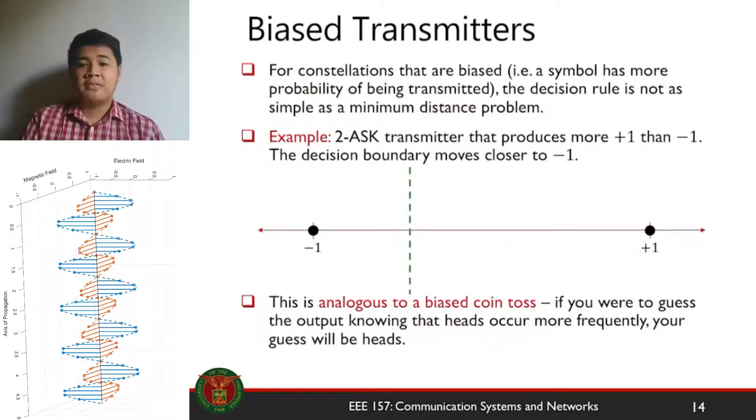Now, if you have a biased transmitter, so one symbol has more probability of being transmitted, the decision rule is not as simple as a minimum distance problem. There's a mathematical formulation for this, but for this course, you don't need to know it.